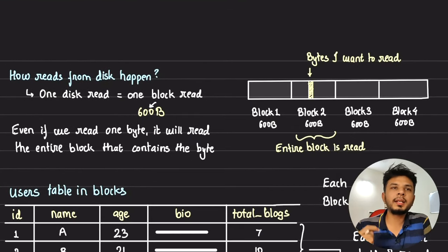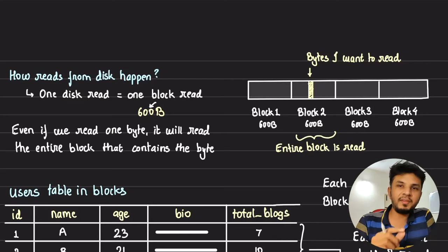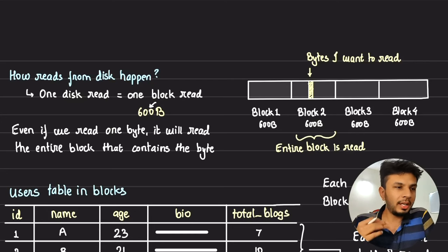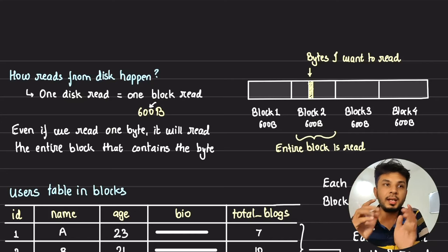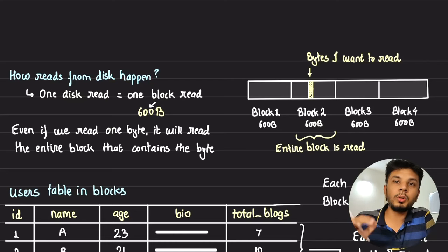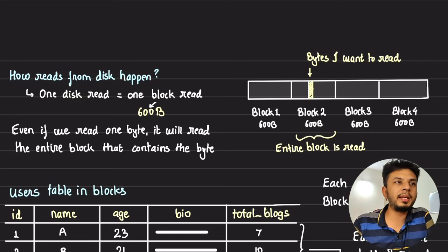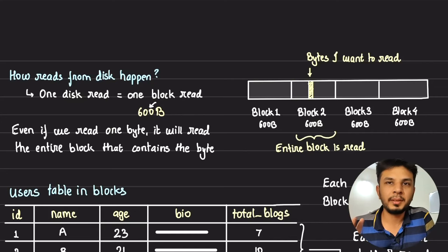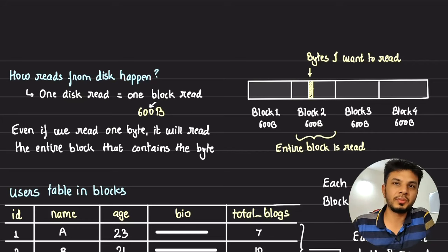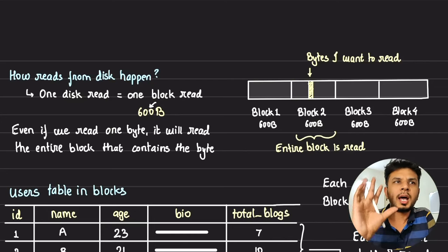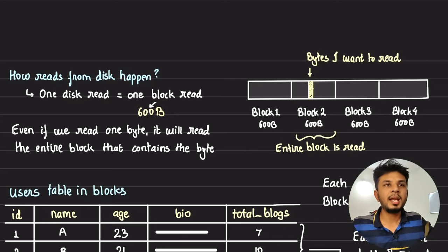Now let's understand how reads from the disk actually happen. Whenever anything is read from the disk — even if you read one byte — it's not that only that byte is read; a block is read. Your entire disk, be it magnetic storage or SSD, is split into blocks, and these blocks are consecutive in nature. A standard block size is typically 4 KB, but you can change it — bigger or smaller, each with its own set of consequences.